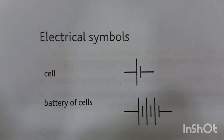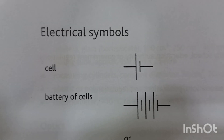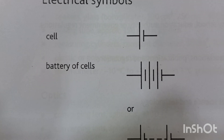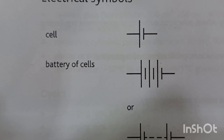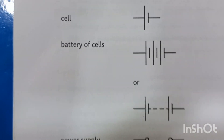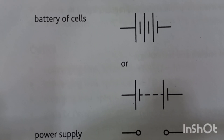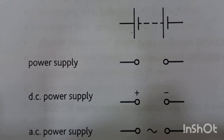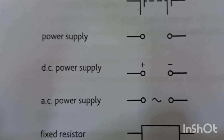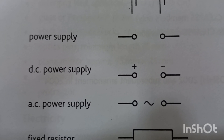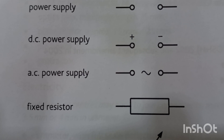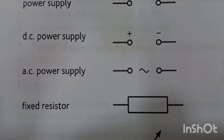The first electric symbol is the cell — wherever you have to draw a cell, you will draw this symbol. Then we have the symbol for the battery, or multiple cells joined together. Both these symbols can be used to represent a battery. This symbol is for the power supply; specifically this one is for the DC power supply, that's why we write positive and negative on both terminals.